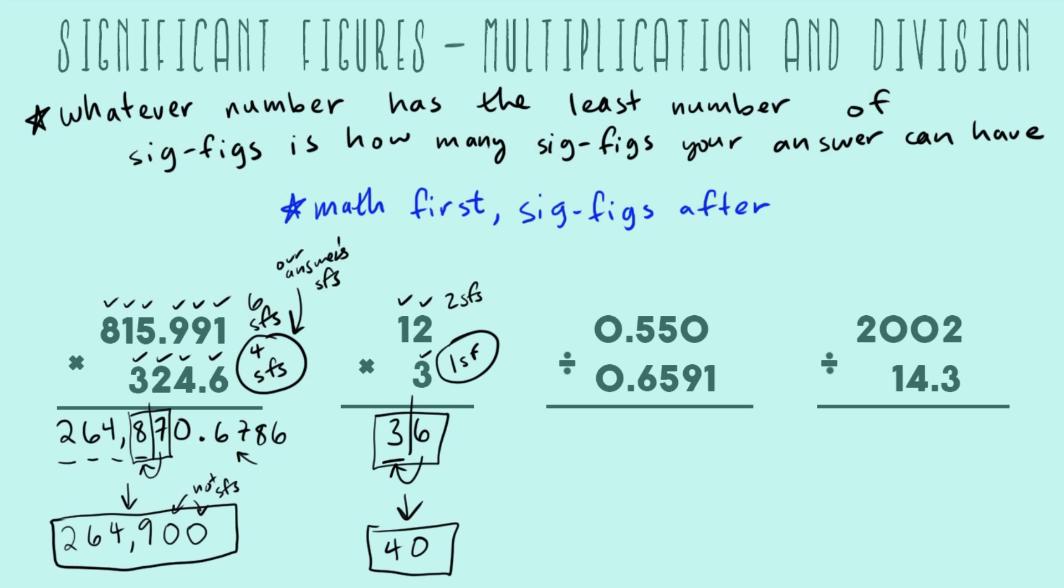That just shows you how weird things can get. Just to remind everybody, we only care about sig figs in science and not math because these are really measurements. If we are actually multiplying 12 times 3 in a science setting, it would mean that our 3 really wasn't very accurate. Whatever we were using to measure that, we only could say we have three things. We wouldn't even know it was 3.1 or 3.2. That's why this had to be rounded up to 40, because it's a really insecure number with only one sig fig.